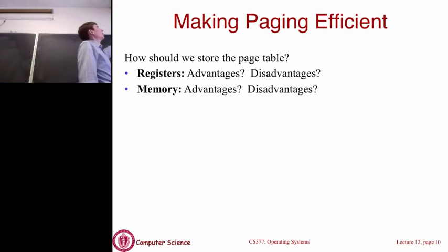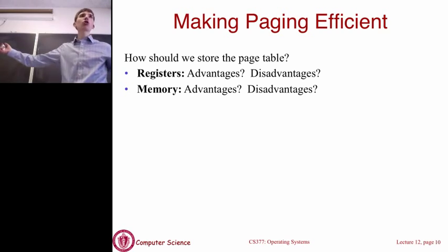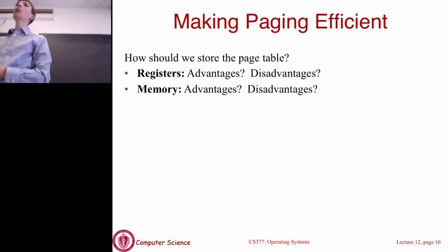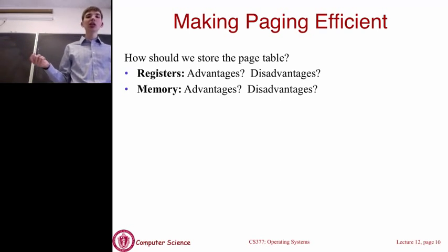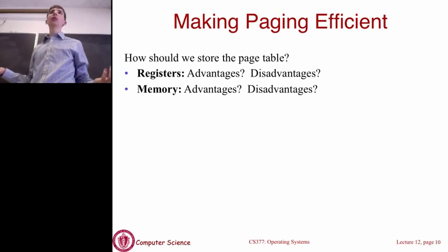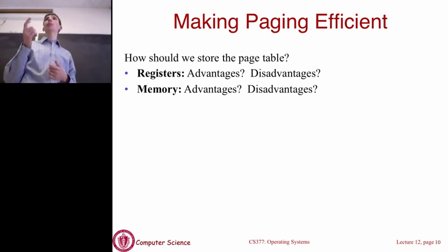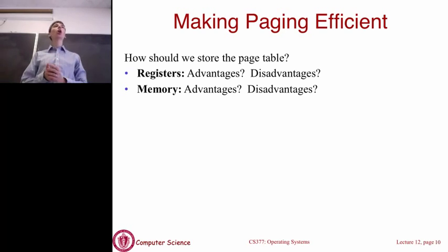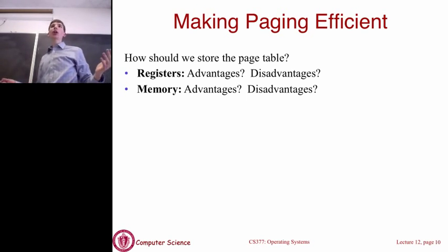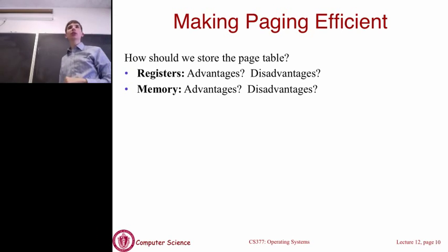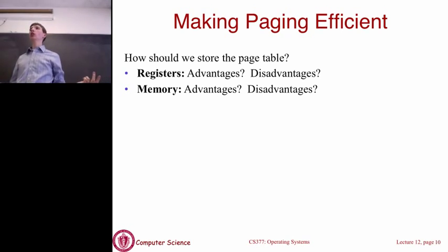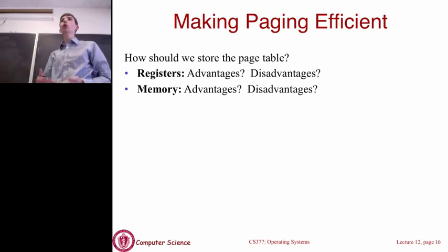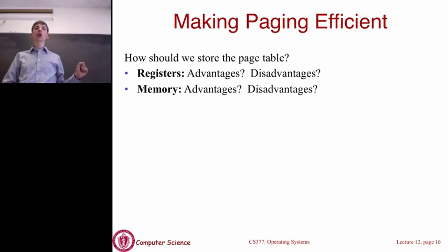If we don't want to use registers, we could store the page table in memory, which can be as large as we want. But the downside is it's slow, and we have to do this every single time we make a memory access. So every time we need to make a memory access, we'd have to go to another memory access just to do the translation. That's going to slow things down by at least 2x, because every memory access incurs another memory access just for the translation.